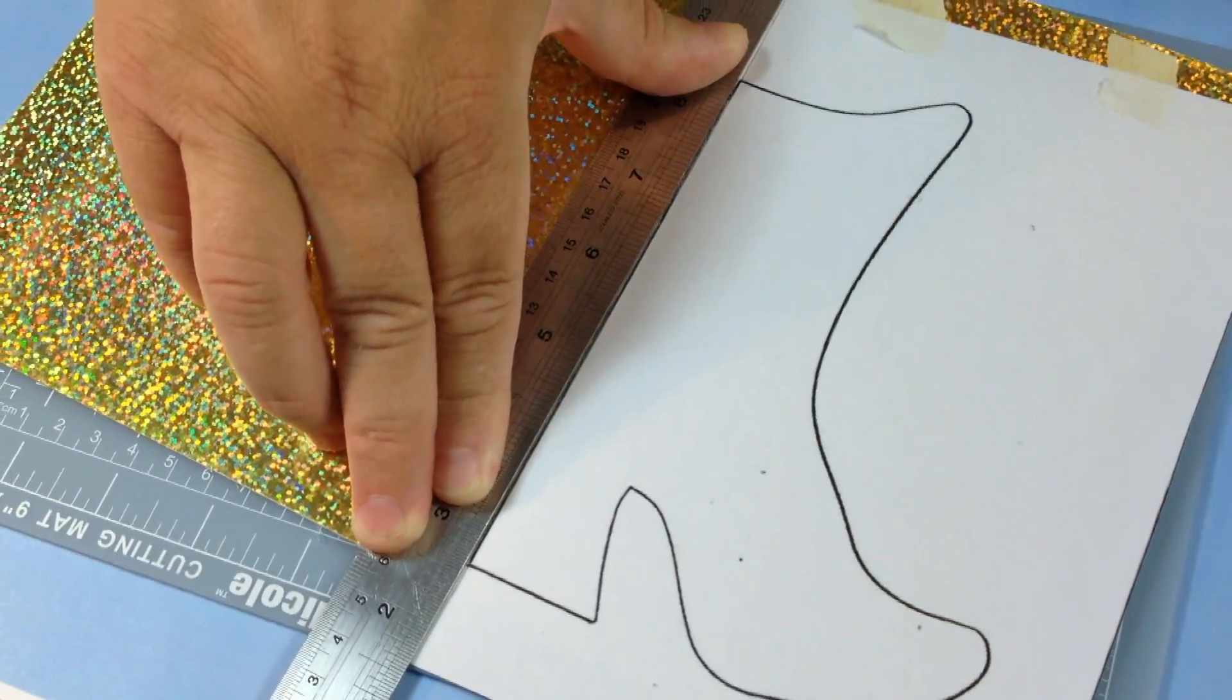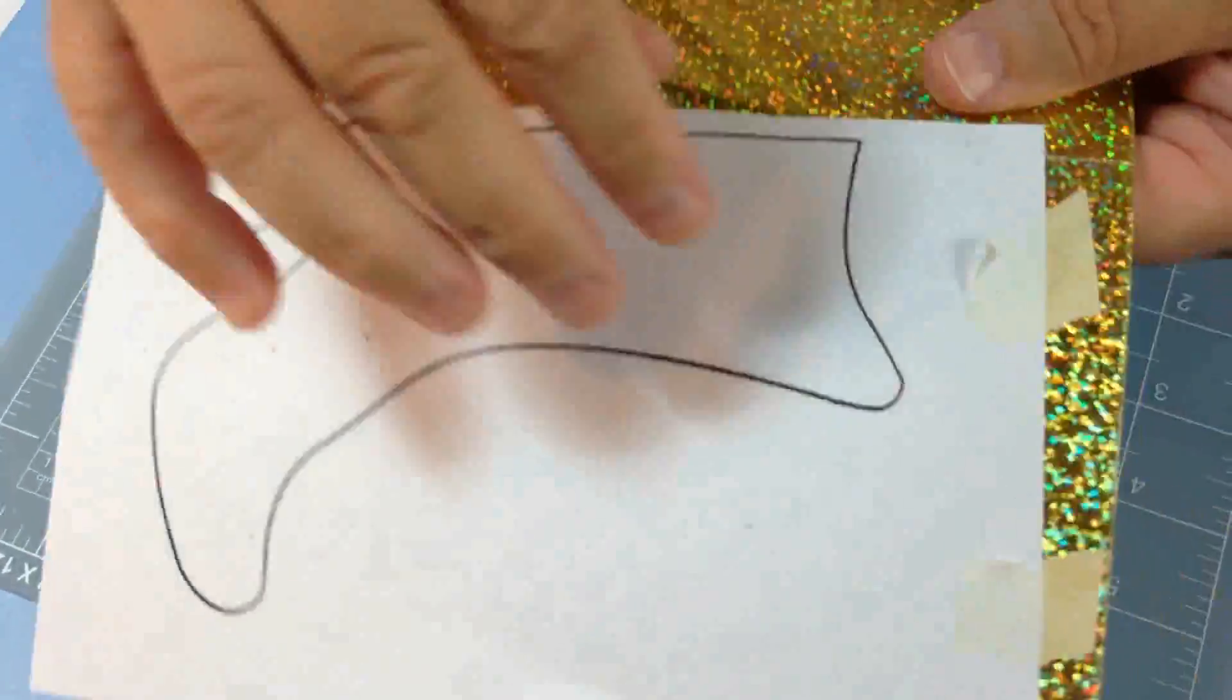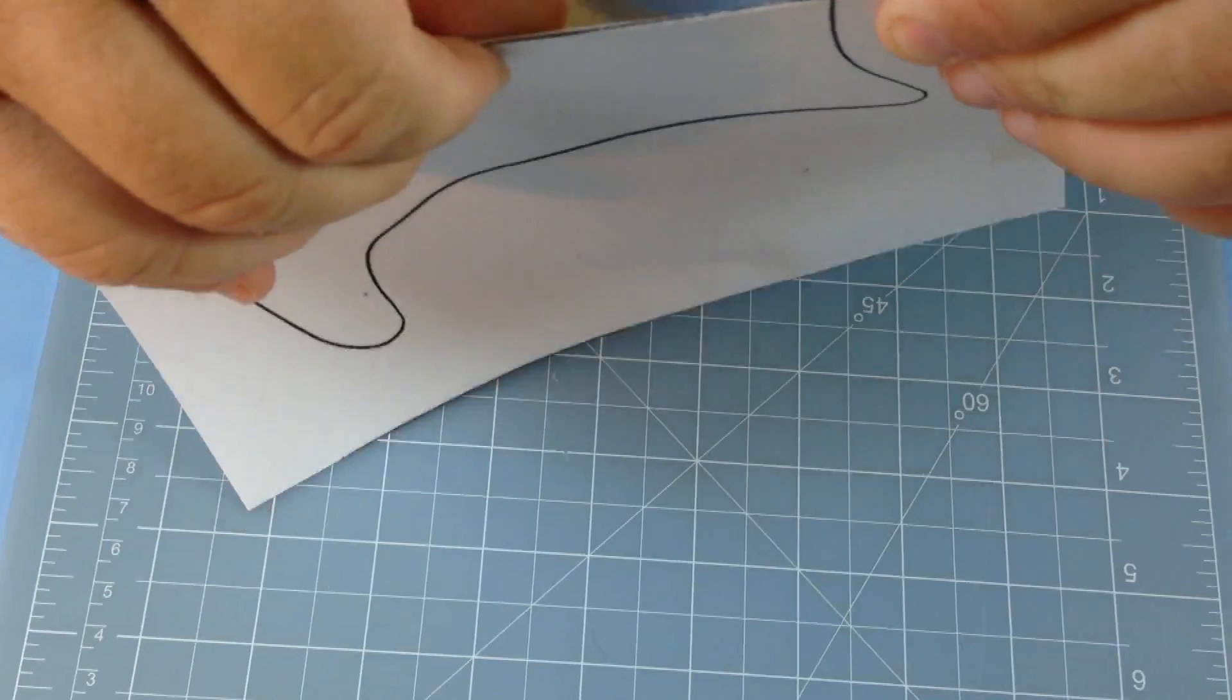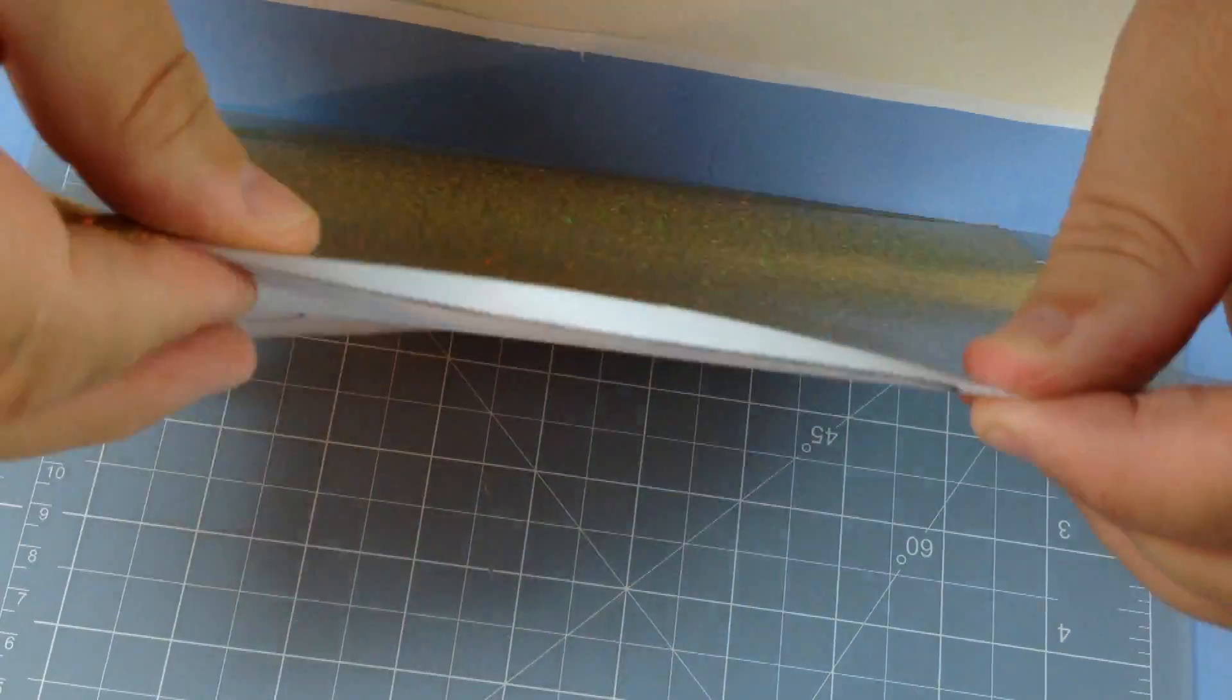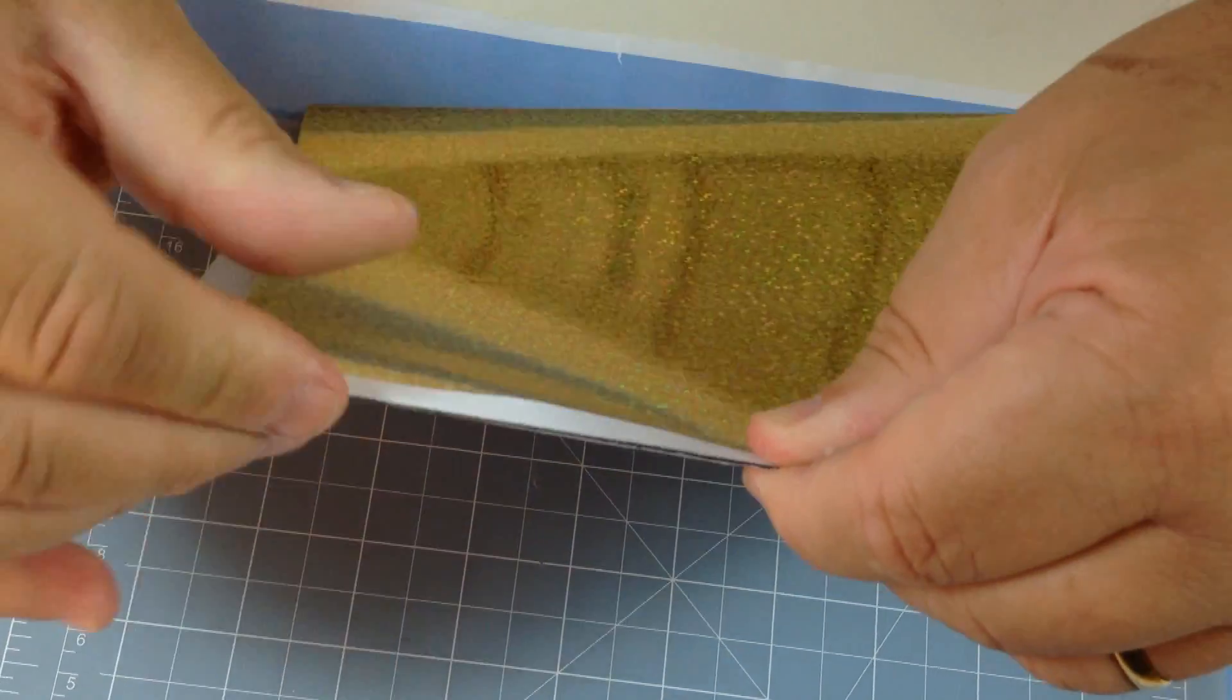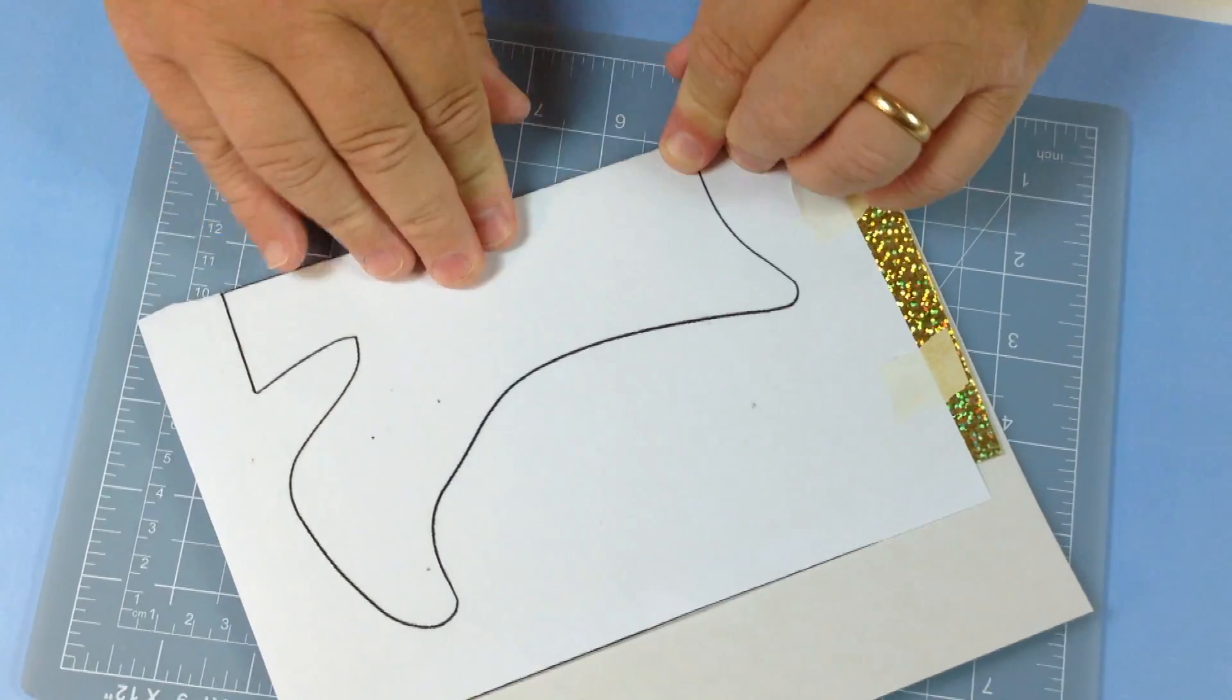This is then going to fold where the crease is, where you've marked it. You can see that's creased now, so that's folded over. Try and press that down so it's a nice good fold.